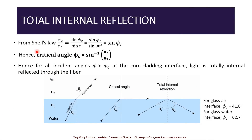From Snell's law, the ratio of refraction gives sin φc / sin r. At the critical angle, the angle of refraction is 90 degrees, so sin φc / sin 90° = sin φc. We can mathematically calculate that sin φc = n2/n1. For all angles greater than the critical angle at the core-cladding interface, light is totally internally reflected through the fiber.